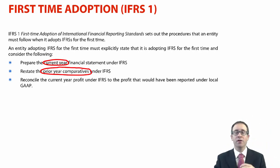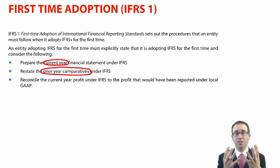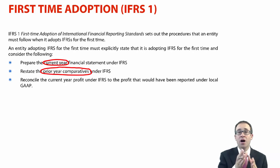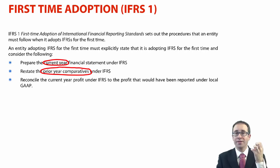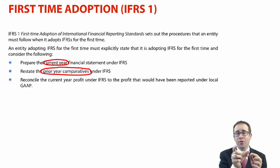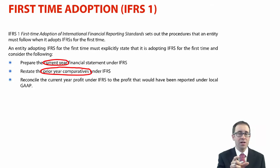We need to have comparability as one of the enhancing qualitative characteristics. So in order for comparability to ensue, we need to make sure that not just this year, but last year's financial statements are also prepared under IFRS. That means you need to go back to the start of the previous financial year and adjust your opening balances to be under IFRS. Effectively, there are three reporting periods you need to adjust for.